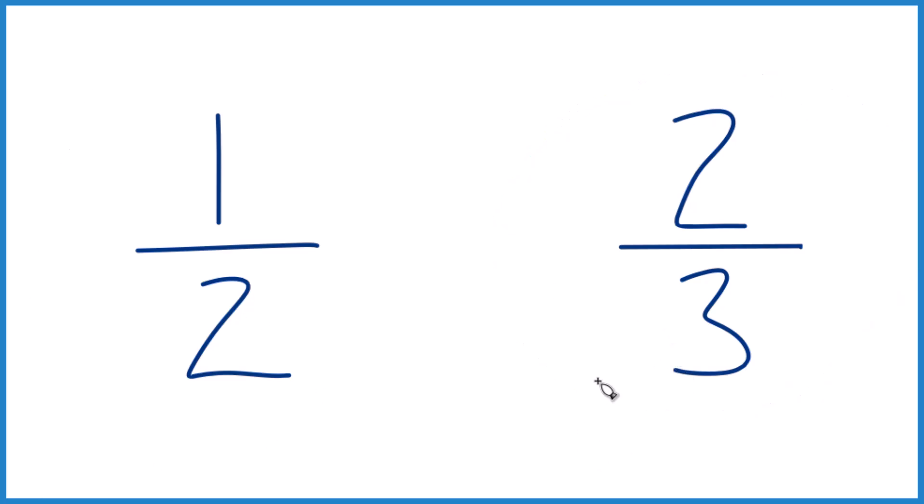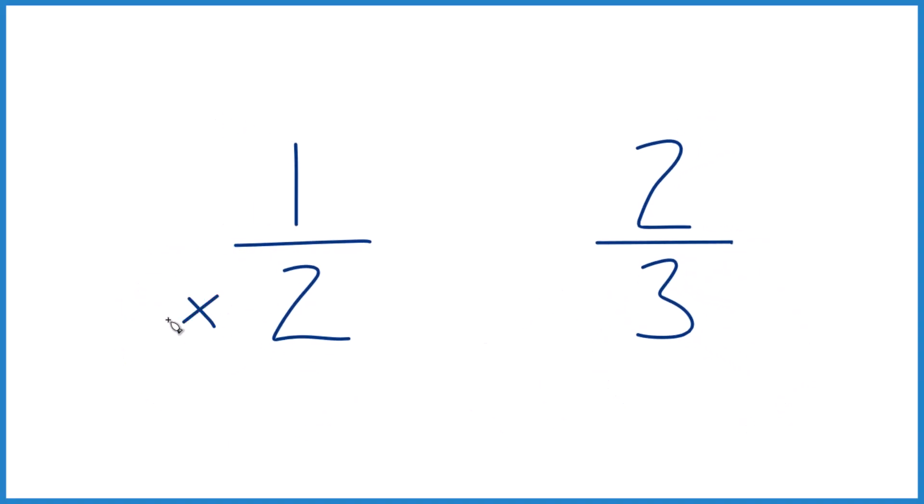But let's figure it out the math way, and let's figure out how much bigger. So when we compare fractions, if we can get the denominator to be the same, we'll just compare the numerator, and we're done. So let's say two times three and three times two, because that'll give us six on the bottom of both of these.